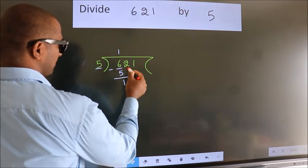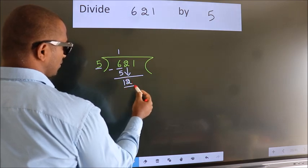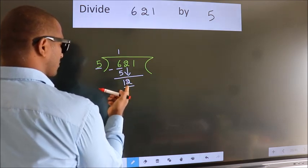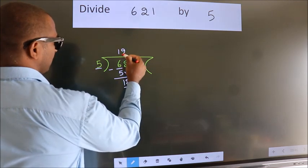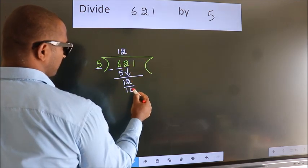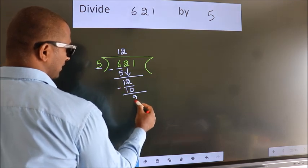After this, bring down the beside number. So 2 down. So 12. A number close to 12 in 5 table is 5 twos 10. Now we subtract. We get 2.